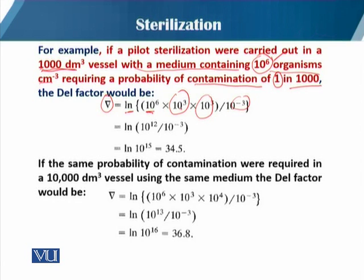Calculating the del factor: 10^6 per ml multiplied by the 1000-liter vessel volume gives a total of 10^9, and dividing by 10^-3 gives 10^12... combining exponents: 9 + 3 = 12, so ln(10^15). Calculating the natural log of 10^15, since ln(10) ≈ 2.303, the result is approximately 34.5.